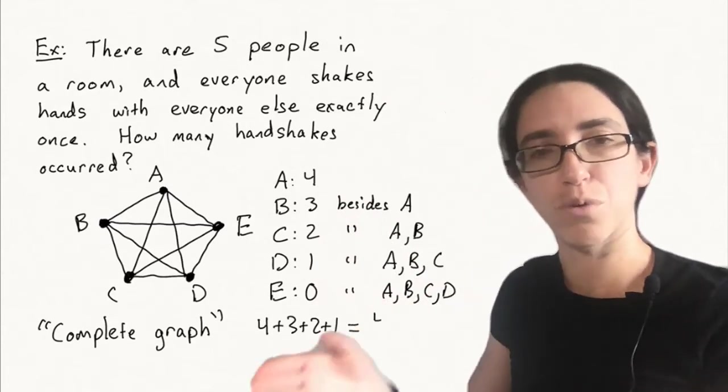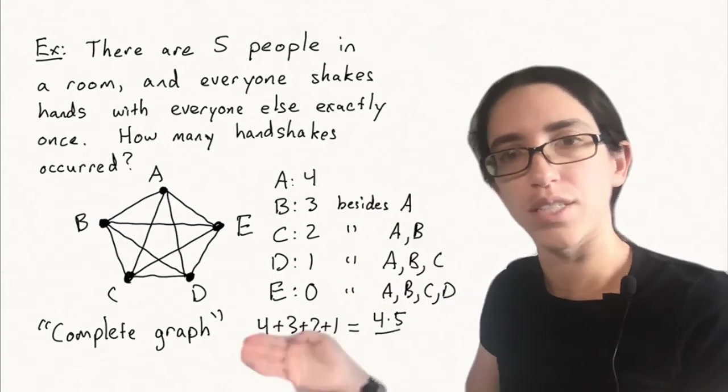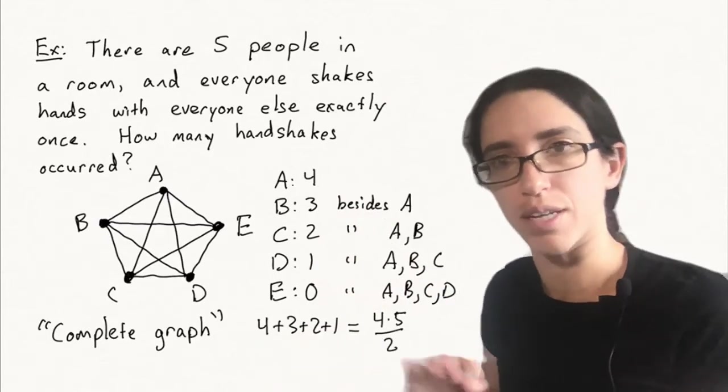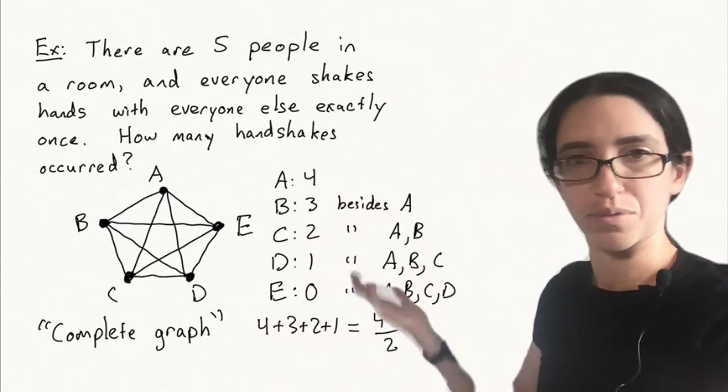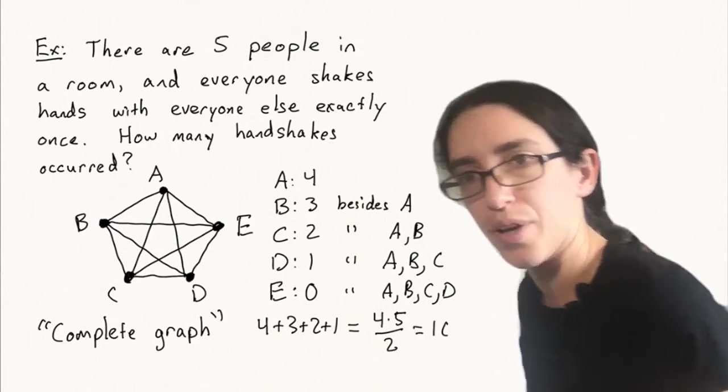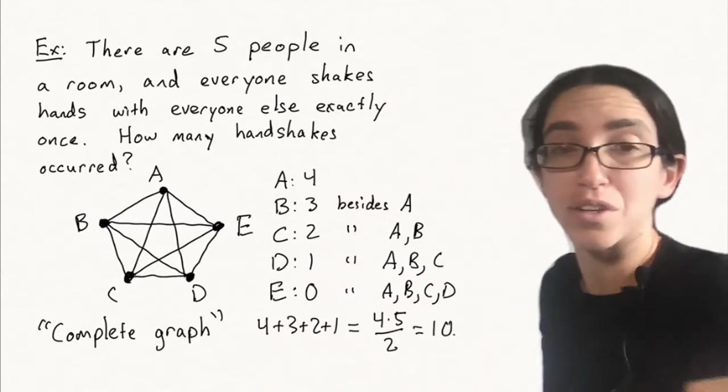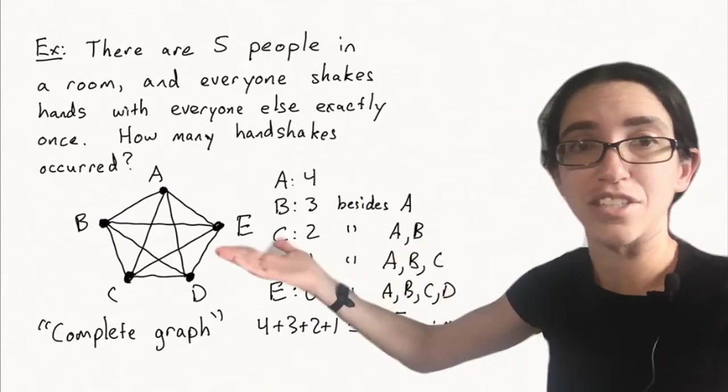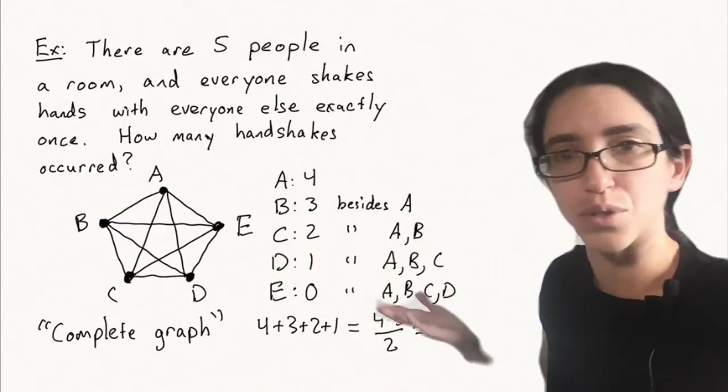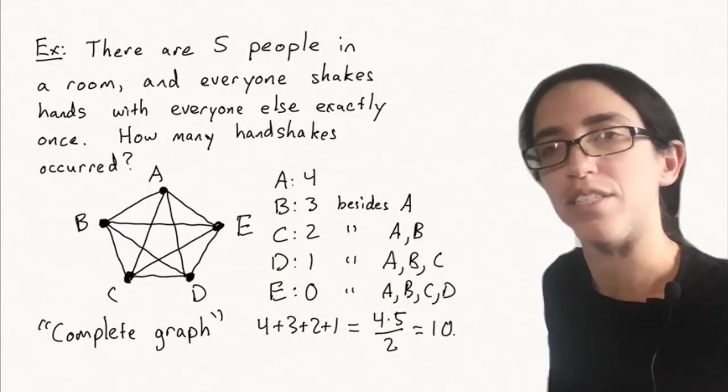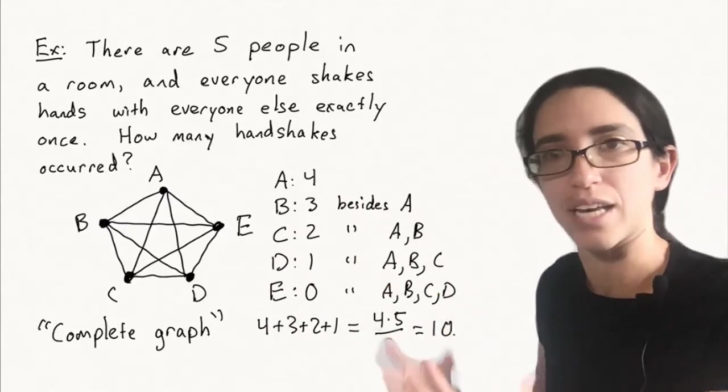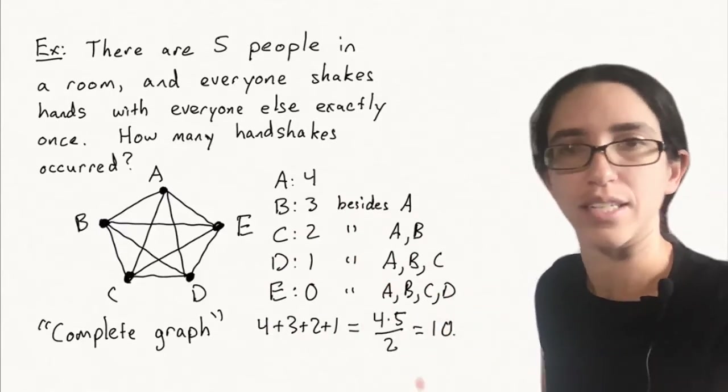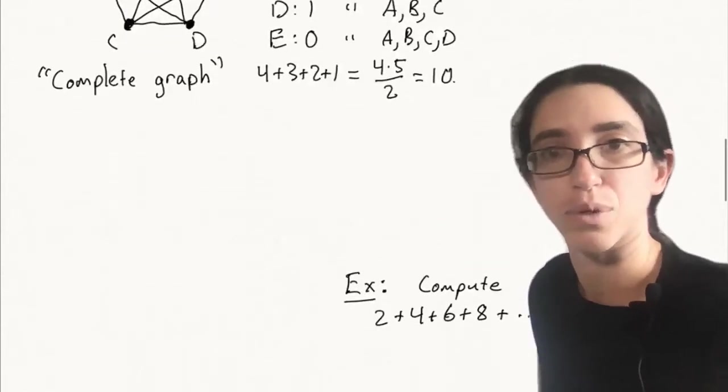So plugging in N equals four into our formula, we get four times four plus one, which is five divided by two. And four times five is 20. Divide that by two, we get 10. Now we could have also just counted the 10 edges on this graph, but this gives you a general way of computing the number of edges in any complete graph. If we have more people, how many handshakes are there? It's always N times N plus one over two if there were N plus one people.